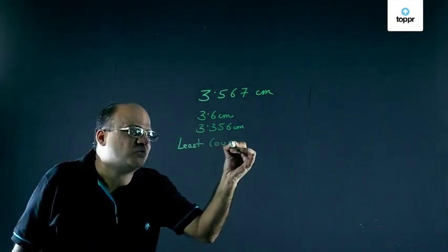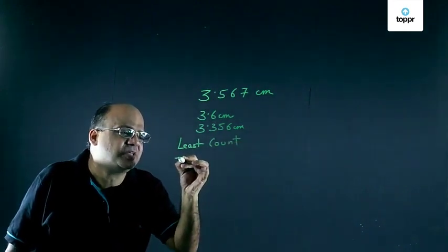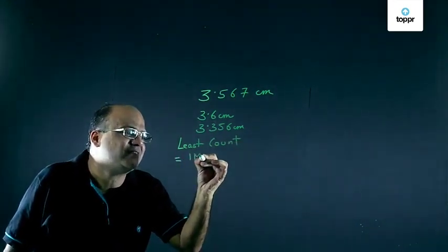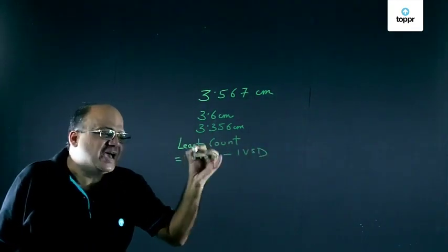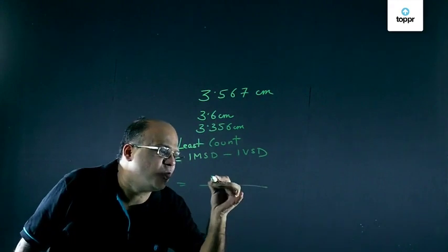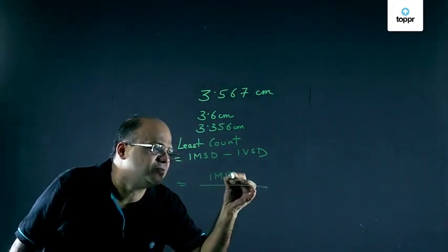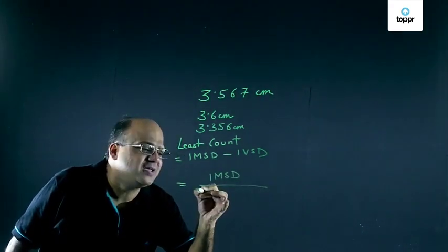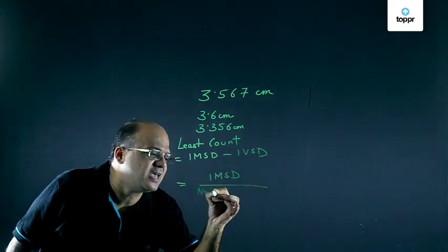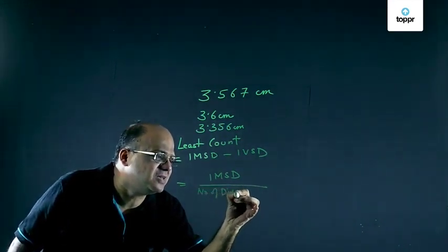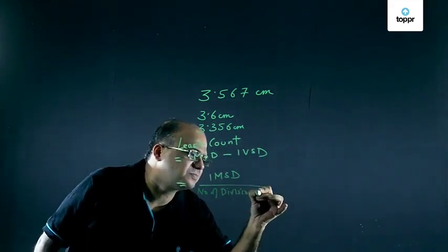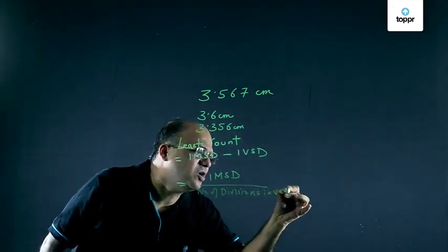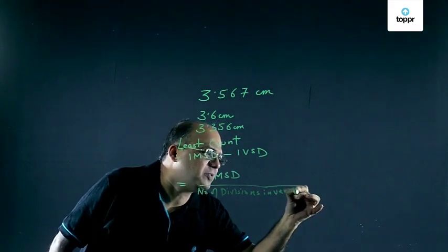Least count of a Vernier caliper is 1 main scale division minus 1 Vernier scale division. And this is also equal to 1 main scale division divided by number of divisions in Vernier scale. This is how we define least count of a Vernier caliper.